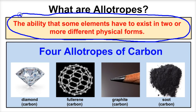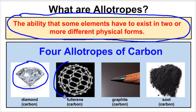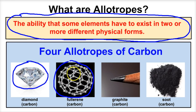For example, if we take a look at carbon, carbon can exist in several different physical forms. For example, this diamond right here is nothing more than carbon atoms arranged in different geometric patterns. This is also carbon — it's the exact same thing, just with carbon atoms rearranging themselves in different geometric patterns, giving us a second type of carbon allotrope called fullerene.